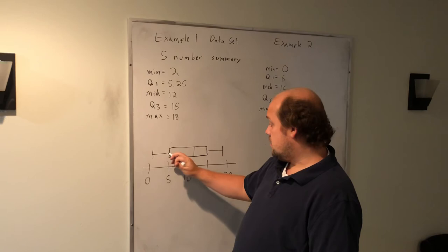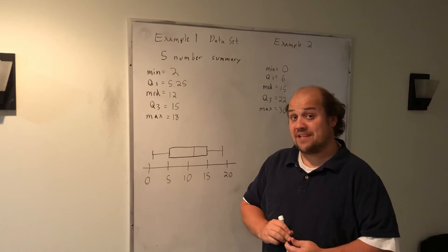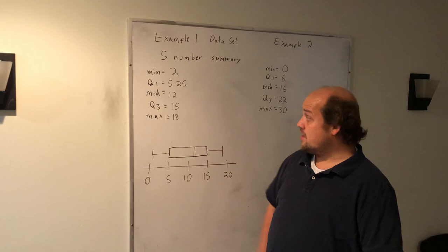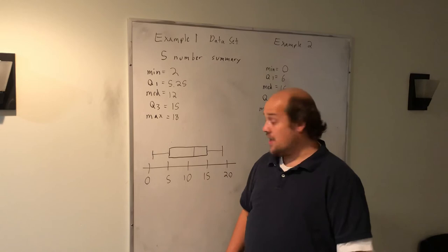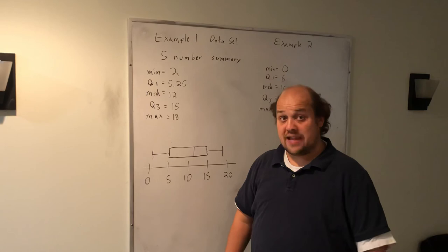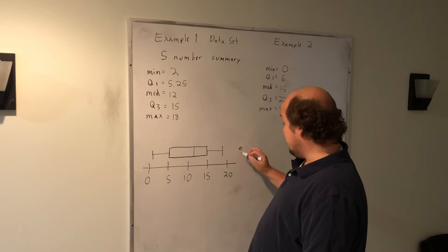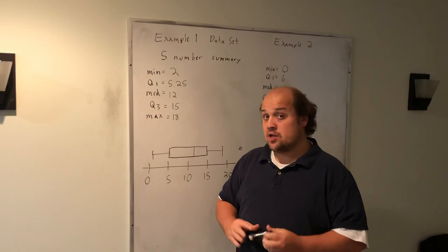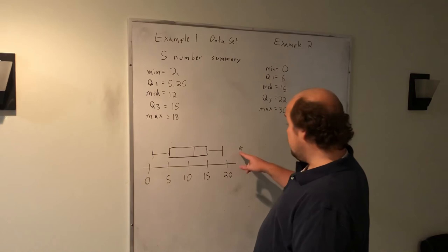There's a somewhat complicated formula that lets you know whether something's an outlier or not. Basically, if I take the IQR interquartile range, which in this case would be 15 minus 5.25, so it would be about 9.75, if I multiply that by 1.5 and then go that far to the right of the box, that far to the left of the box, anything beyond that would be considered an outlier. I do not need you to understand that formula. I just need you to understand that sometimes in a box plot you might see something like this. That indicates that there is one data point further away from the center of the box plot and that that data point is an outlier by the formal definition of an outlier.